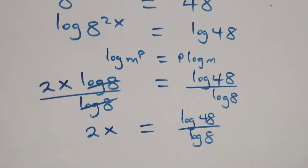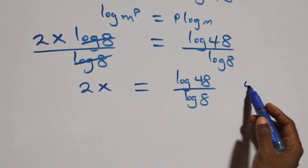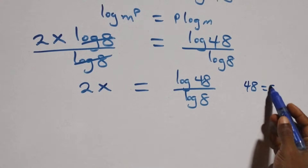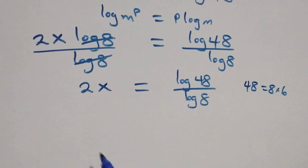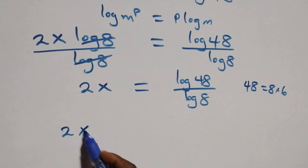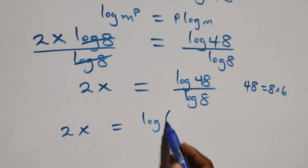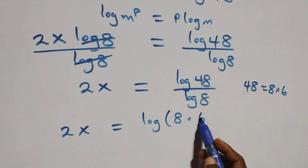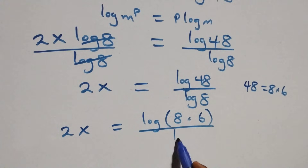The next step: we can write 48 as 8 times 6. Then what we have becomes 2x equals log of 8 times 6, over log 8.